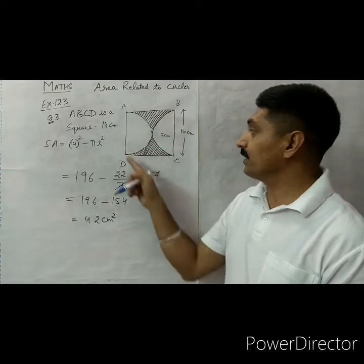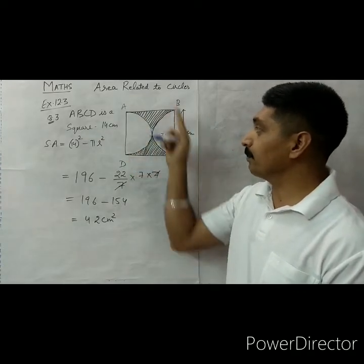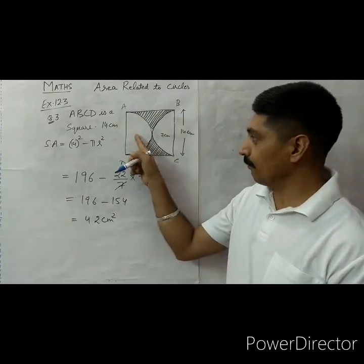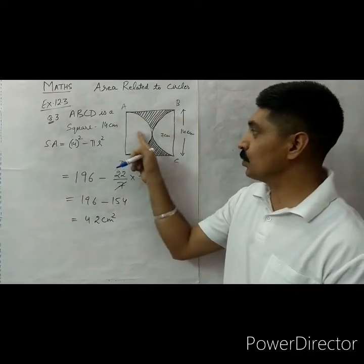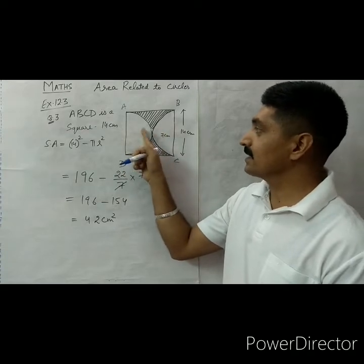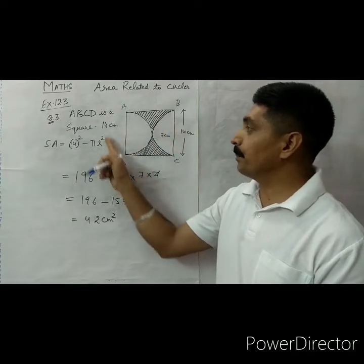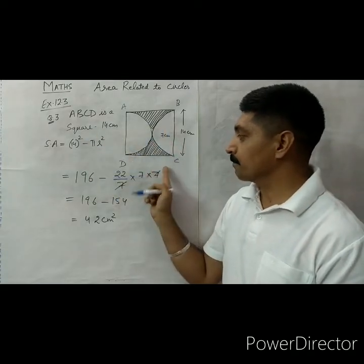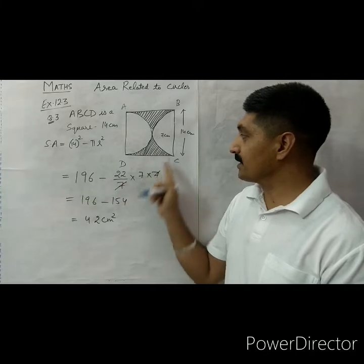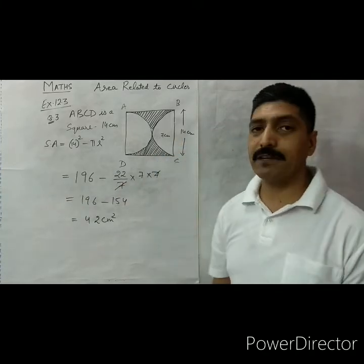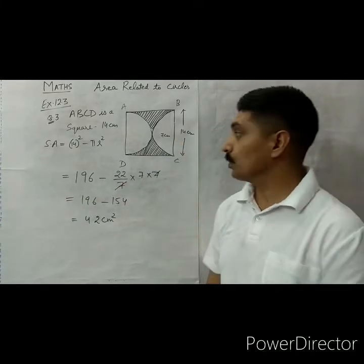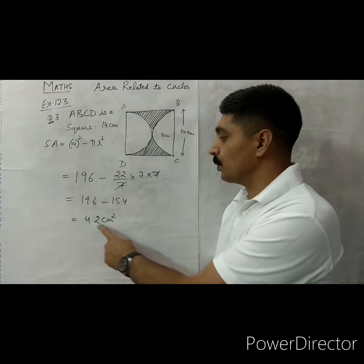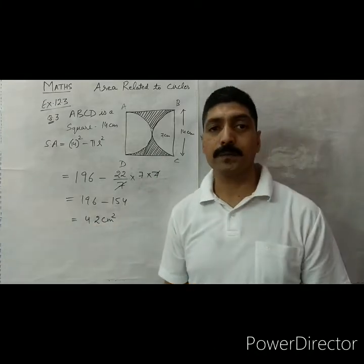We have calculated the area of the complete square minus the area of the two semicircles, which together form a complete circle — that is πr². With r = 7, the shaded area is 42 centimeter square.